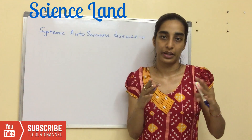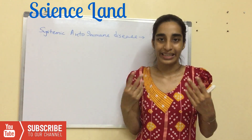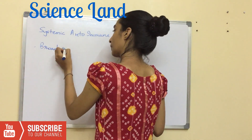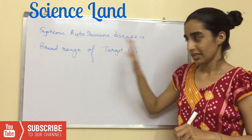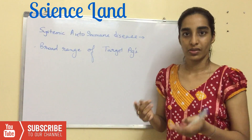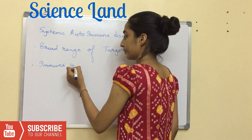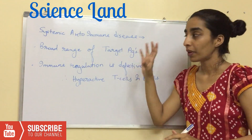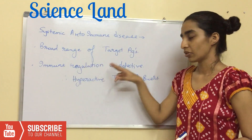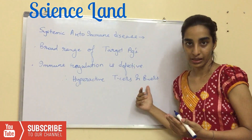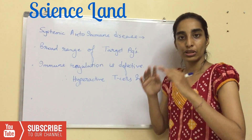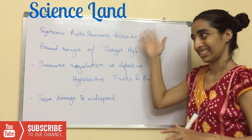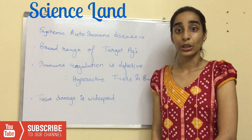Organ-specific autoimmune diseases have two mechanisms of mediation. Systemic autoimmune diseases have a generalized mechanism with a broad range of target antigens — lots of cells and tissues are involved. In systemic autoimmune disease, the organism's immune regulation is defective, leading to hyperactive T cells and B cells, causing widespread tissue damage. That's it for today's video. Thank you so much for watching. Do share and subscribe. Bye.